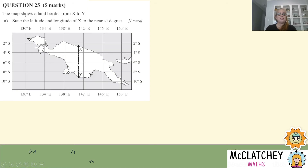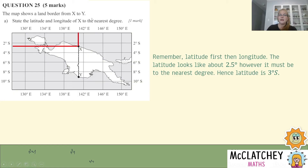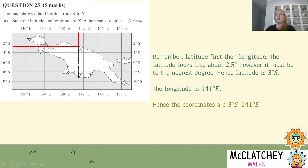Question 25, worth five marks. The map shows a land border from X to Y — this looks like it's Papua New Guinea and Indonesia. Firstly, we need to state the latitude and longitude of X to the nearest degree. Having a ruler is really handy here. Drawing a line across, it's not quite three degrees but it's closest to three — probably about two and a half degrees, but rounding to the nearest degree that's three degrees south. The longitude is 141 degrees east, sitting halfway between 140 and 142. So the coordinates of X are 3 degrees south, 141 degrees east — that's our first mark.